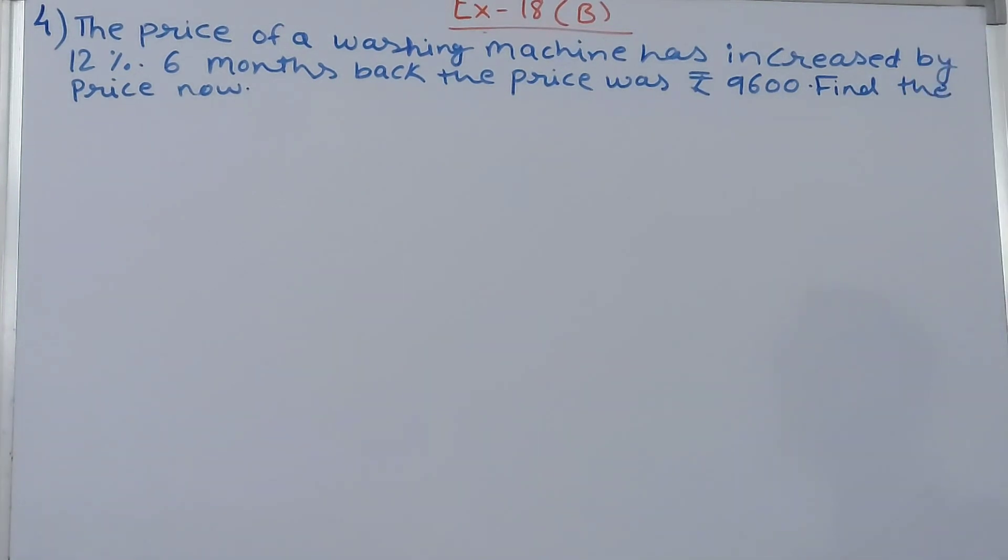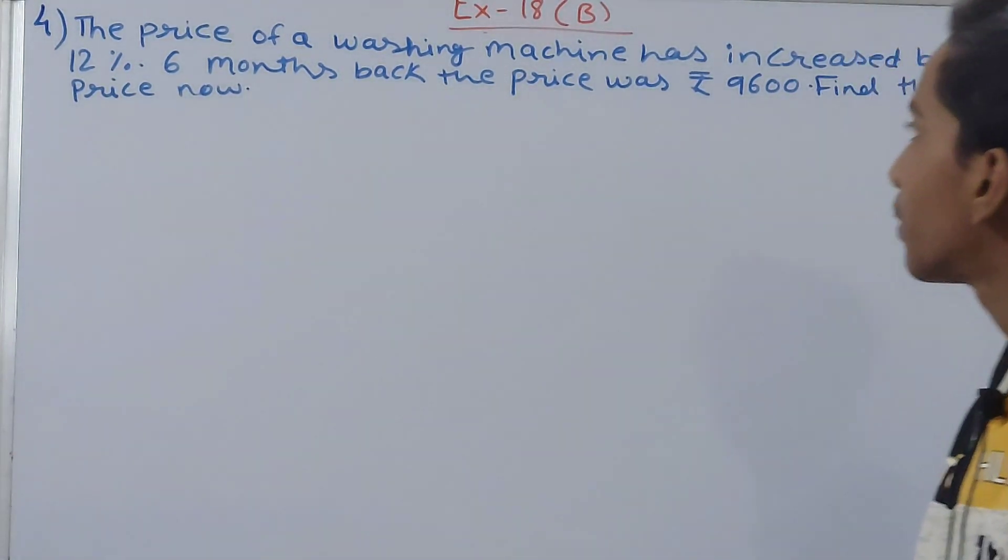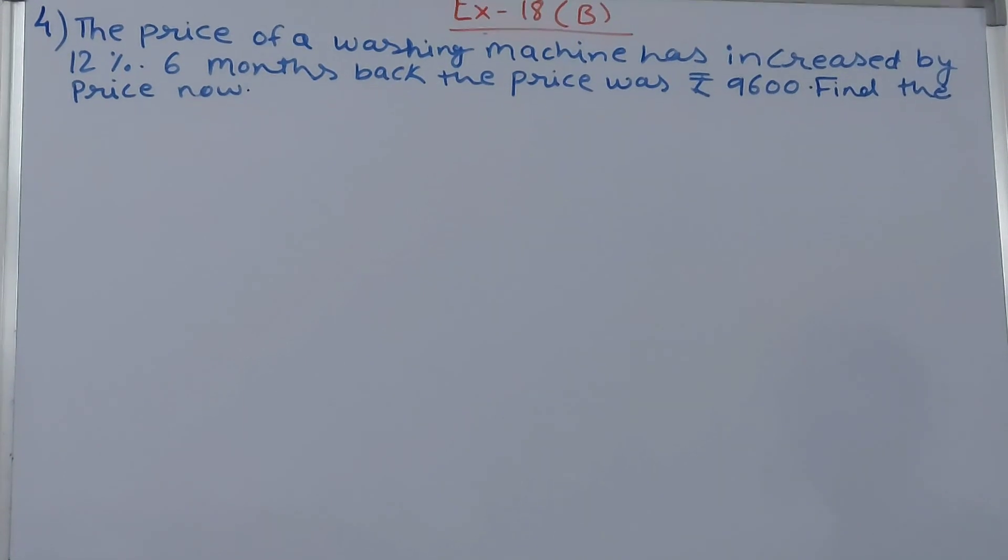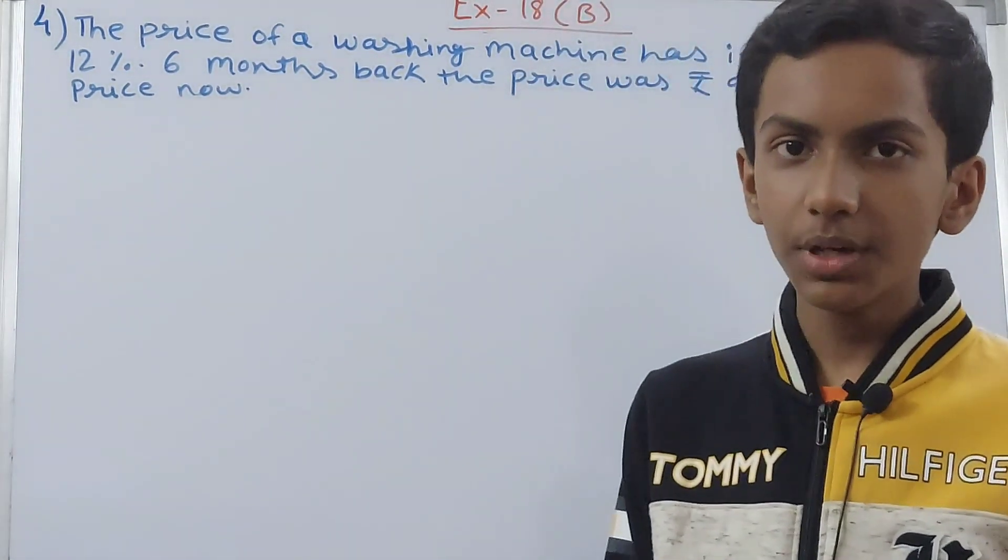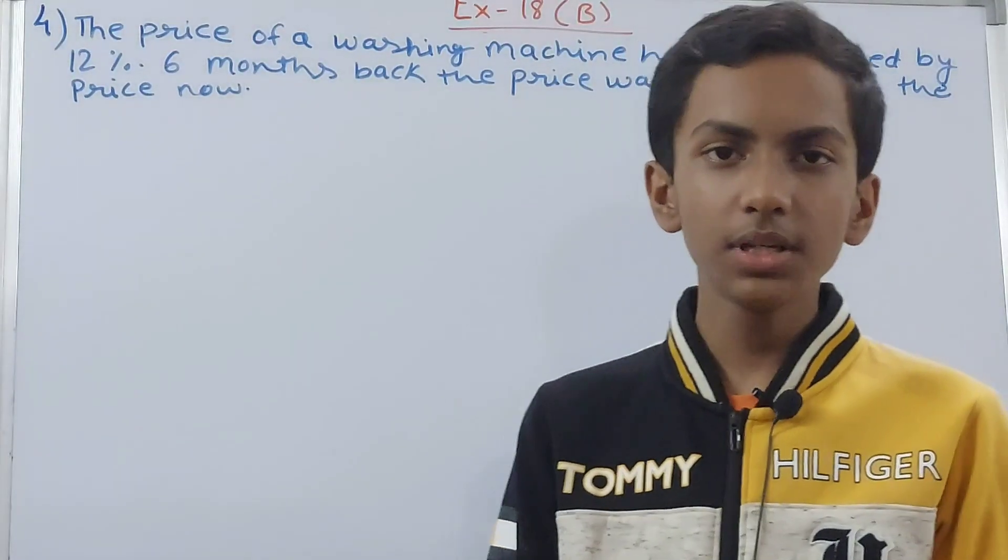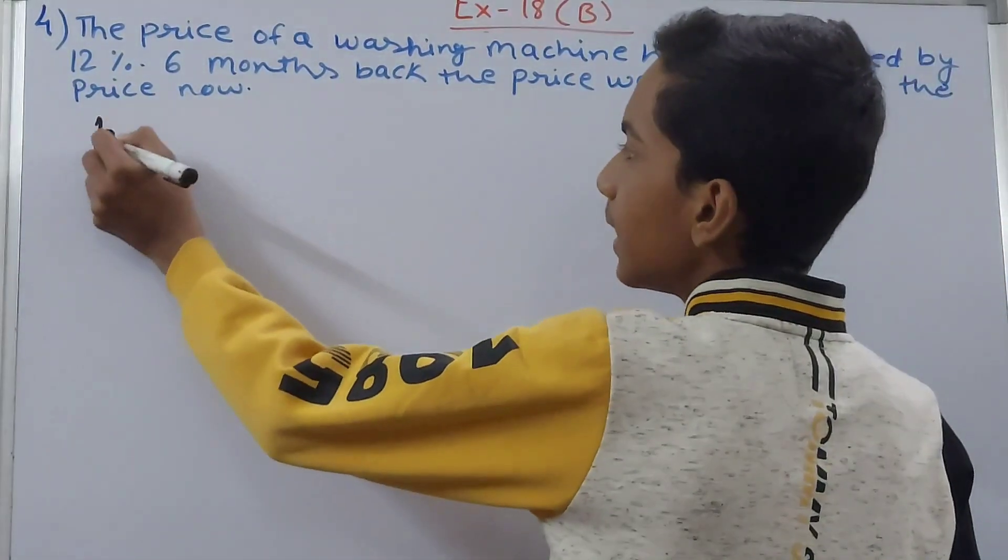The price of a washing machine has increased by 12 percent. Six months back the price was ₹9600. Find the price now. So the price of a washing machine six months back was ₹9600.